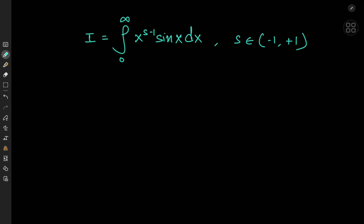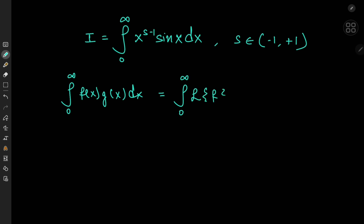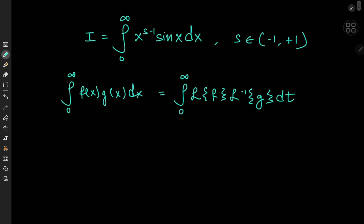Our approach is going to make use of a very cool result I derived a while back — link in the description below — for a proof that the integral from zero to infinity of f(x) times g(x) dx equals the integral from zero to infinity of the Laplace transform of f times the inverse Laplace transform of g, both treated as functions of some variable t, integrated with respect to t.